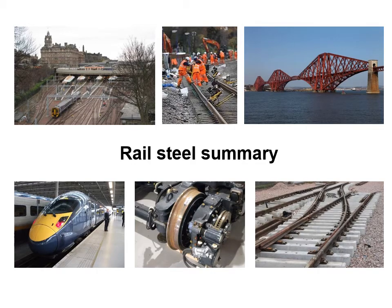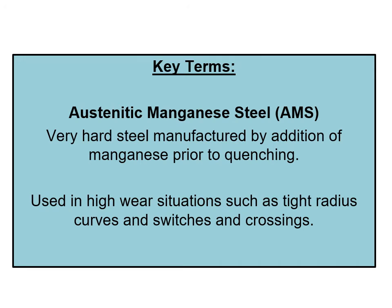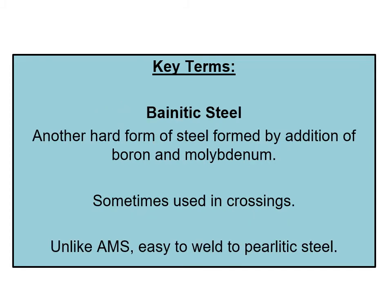To summarise the rail steel terminology: austenitic manganese steel, or AMS, is a very hard steel manufactured by the addition of manganese prior to quenching. It's used in high wear situations such as tight radius curves and switches and crossings. Bainitic steel is another hard form of steel formed by the addition of boron and molybdenum, sometimes used in crossings. Unlike AMS, it's easy to weld to pearlitic steel.